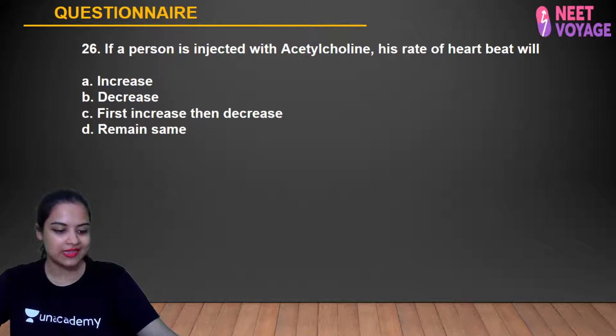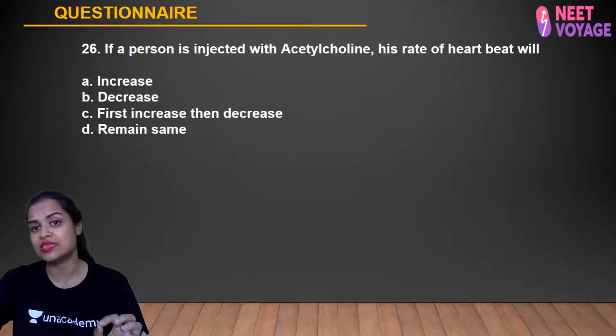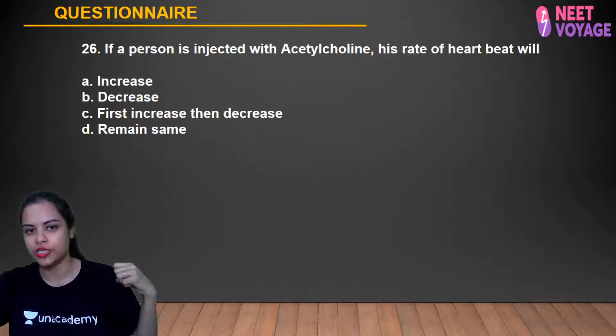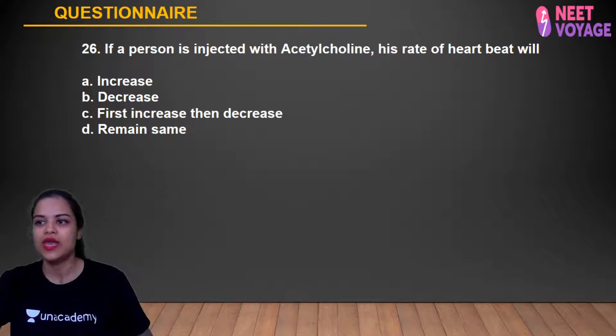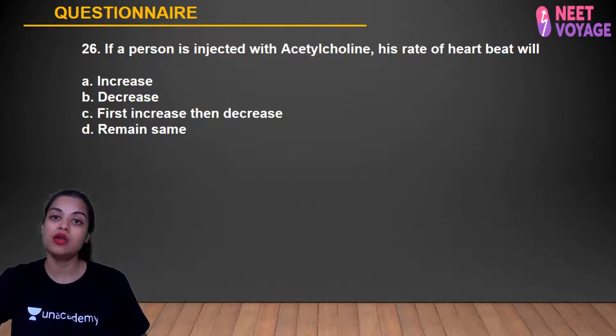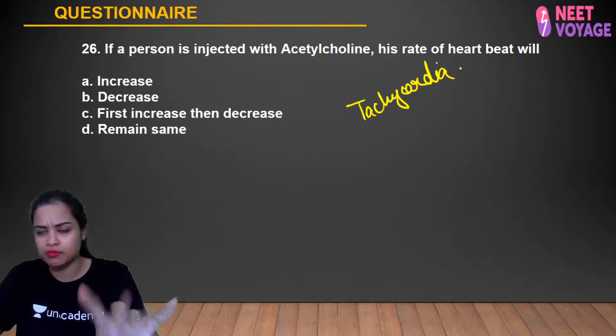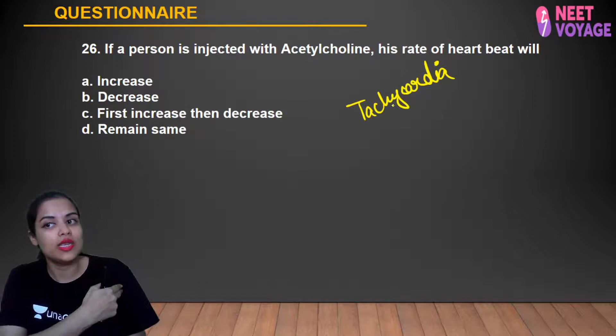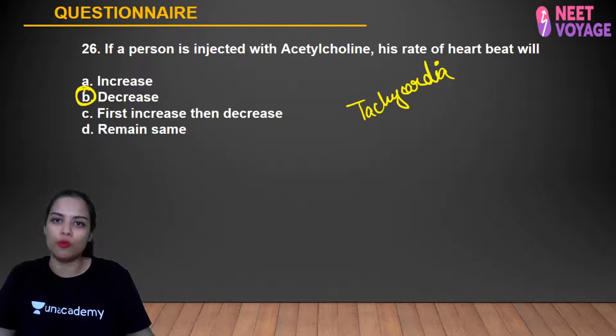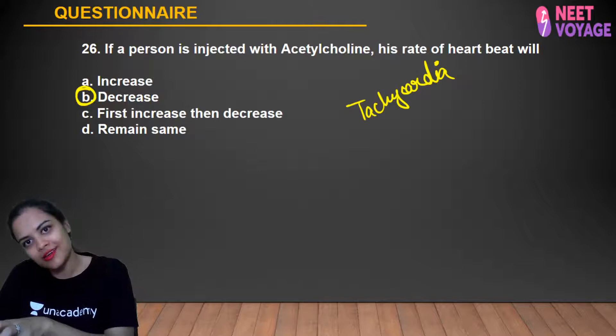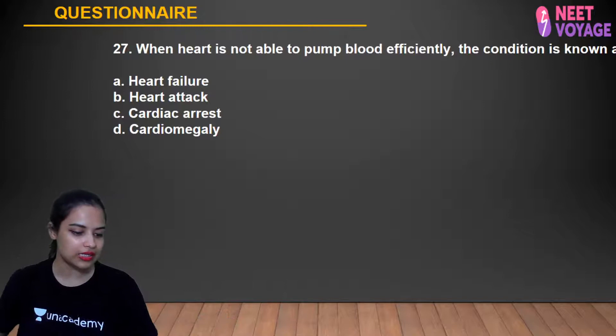Question 26: If a person is injected with acetylcholine, his heart rate will do what? Acetylcholine injection is given when heart beat is too fast — tachycardia (more than average, >100 beats per minute). Acetylcholine decreases the heart rate, bringing it back to normal. So the answer is B (decrease). Alok, Simran, Anshika, Tanusha, Shashank gave the correct answer B.